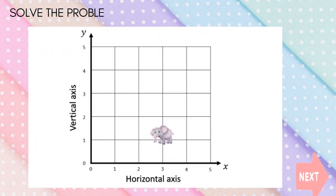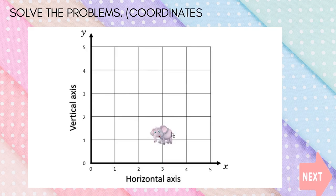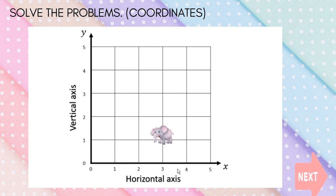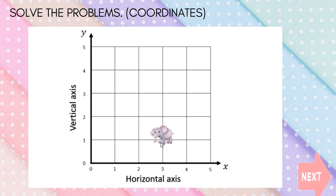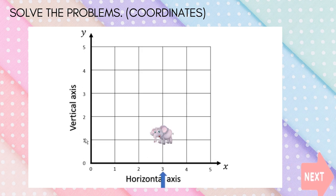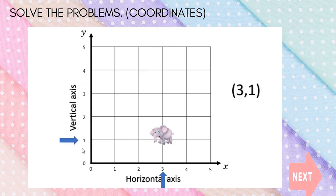For example, how do we find the coordinates of the elephant? First, look at the X axis: 1, 2, 3 — so the elephant is at the 3rd position on the X axis. Then look at the Y axis: 1. So the answer is (3, 1).